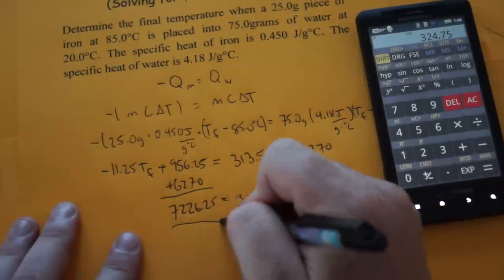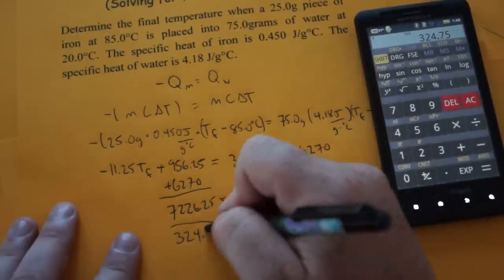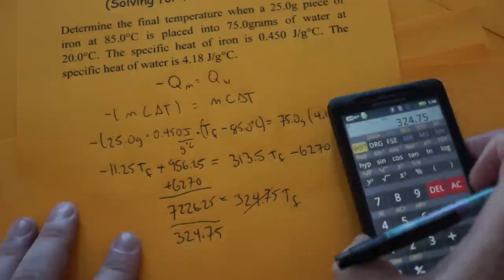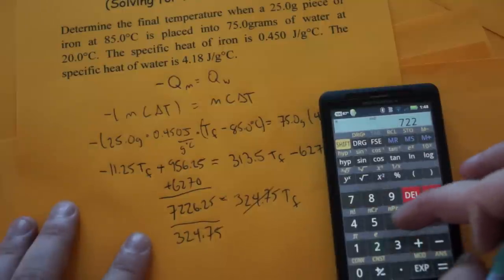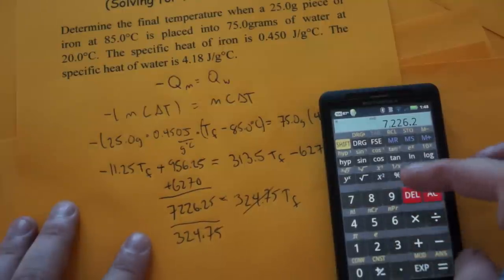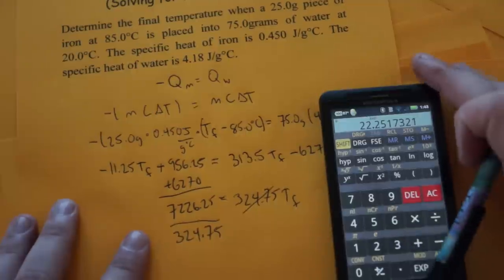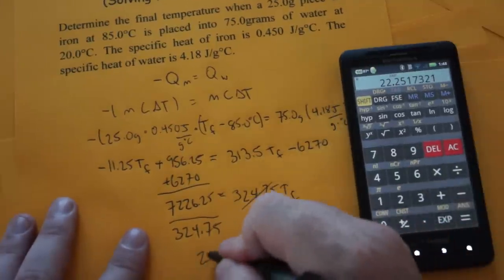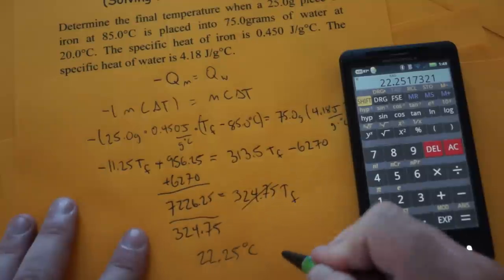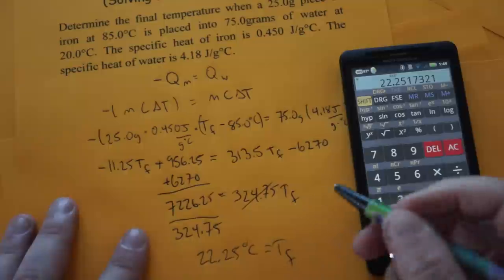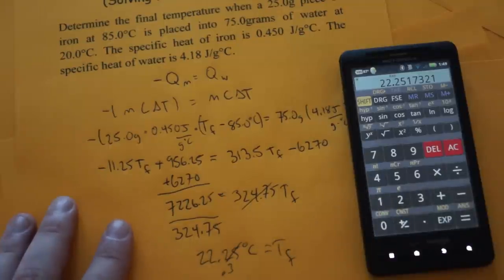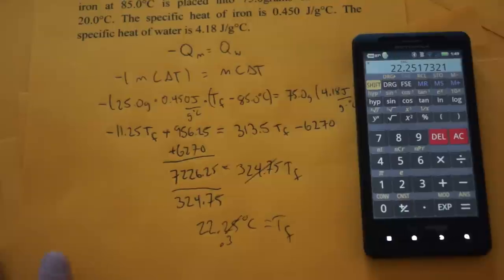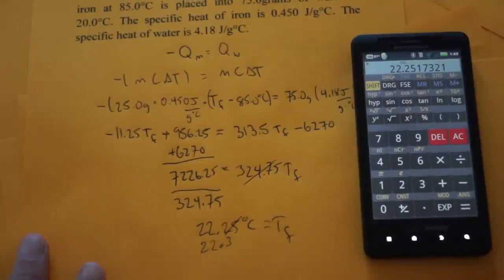Now I'll just bring this over, 324.75. Now, what we want to do is make sure that this number, when we calculate it, comes out between 20 and 85. So let's find out. 22.25 degrees Celsius is our final temperature. And this should probably be 3 sig figs, so we'll go there. 22.3 degrees Celsius is our final temperature. So that's how you calculate for the final temperature when you drop a metal in water.